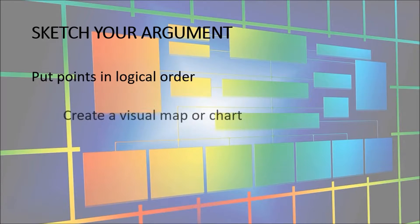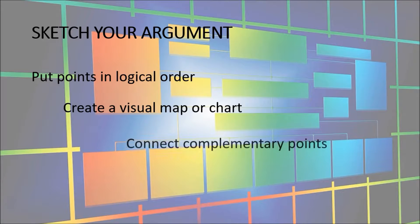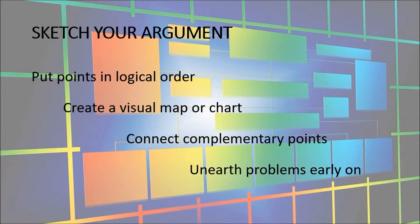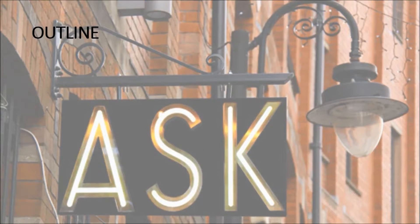Sketch your argument — give logical order to the points that build to address the core thesis. Create a visual map, for example spider diagrams, flowcharts, lists, whatever works for you. This will help you connect points that complement and bolster each other, strengthening your argument. It will also make visible any overlaps and incongruities that could weaken your argument if not addressed.